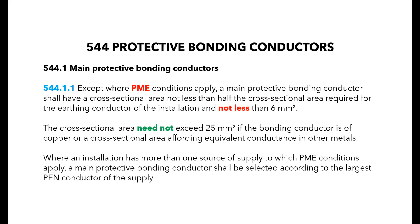Except where PME conditions apply, a main protective bonding conductor should not be less than half the CSA of the earthing conductor and not less than 6mm squared. Although usually in a domestic installation, you will find that a 10mm squared cable will be installed in most situations.